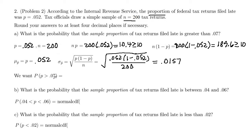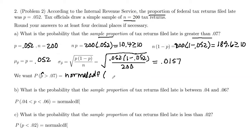We want to know what is the probability that the sample proportion of tax returns filed late is greater than 0.07 — that is, greater than 7% filed late. So we're asking: what is the probability that P-hat is greater than 0.07? We'll use normal CDF, with a lower cutoff of 0.07, upper cutoff of 10,000 (infinity), mean of 0.052, and standard deviation of 0.0157.